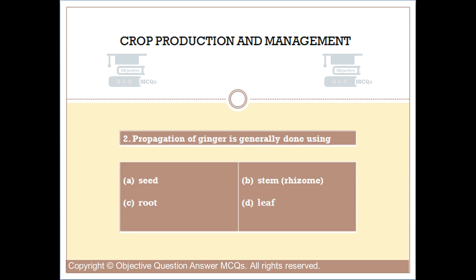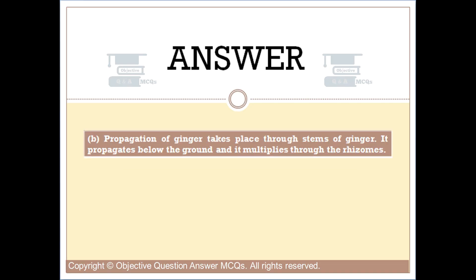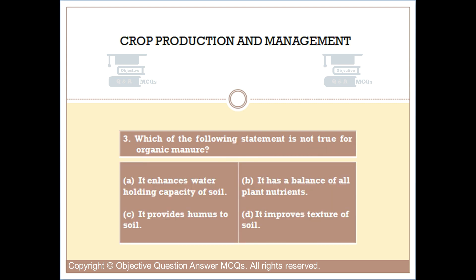Question number two: propagation of ginger is generally done using option A: seed, option B: stem rhizome, option C: root, option D: leaf. The right answer is option B. Propagation of ginger takes place through stems of ginger; it propagates below the ground and multiplies through the rhizomes.